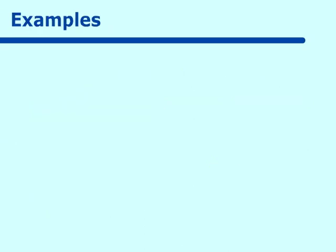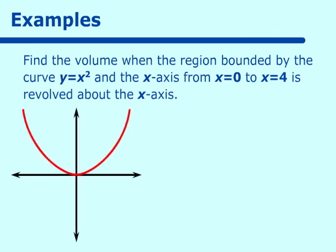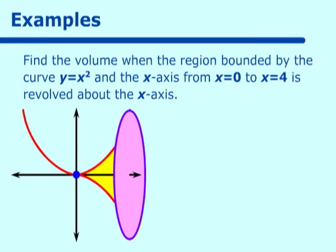Here's an example. Find the volume when the region bounded by the curve y equals x squared, the x-axis from x equals 0 to x equals 4, is revolved around the x-axis. We've got y equals x squared, the x-axis from x equals 0 to x equals 4. This is the region we are revolving about the x-axis, and we'll have the mirror image come down and make it look three-dimensional by putting the circle in.